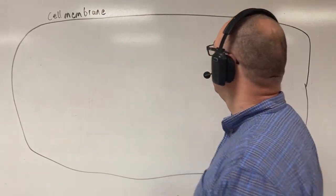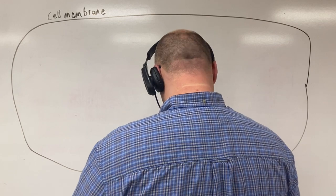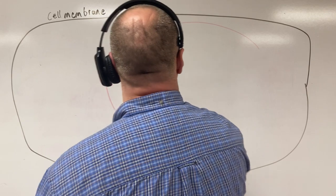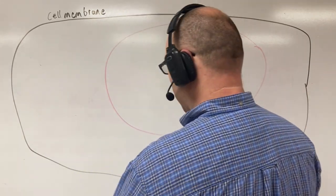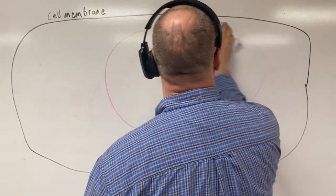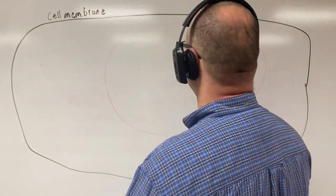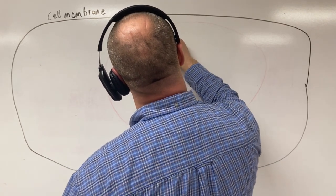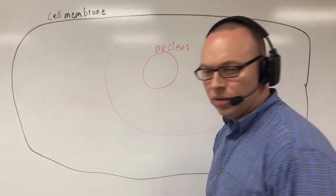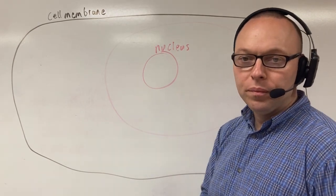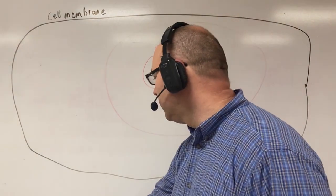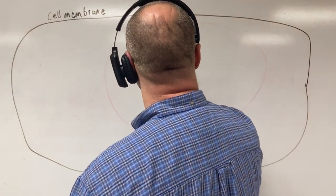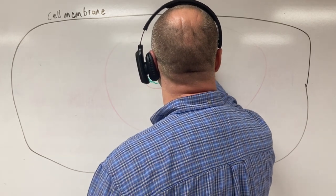The next structure is the nucleus. Now if I were to draw this to scale, it would take up half the cell, but for the sake of space I'm going to draw my nucleus a lot smaller. This is going to house the cell's DNA. If you look inside the nucleus, you've got the squiggly stuff, and this is going to be your chromatin.